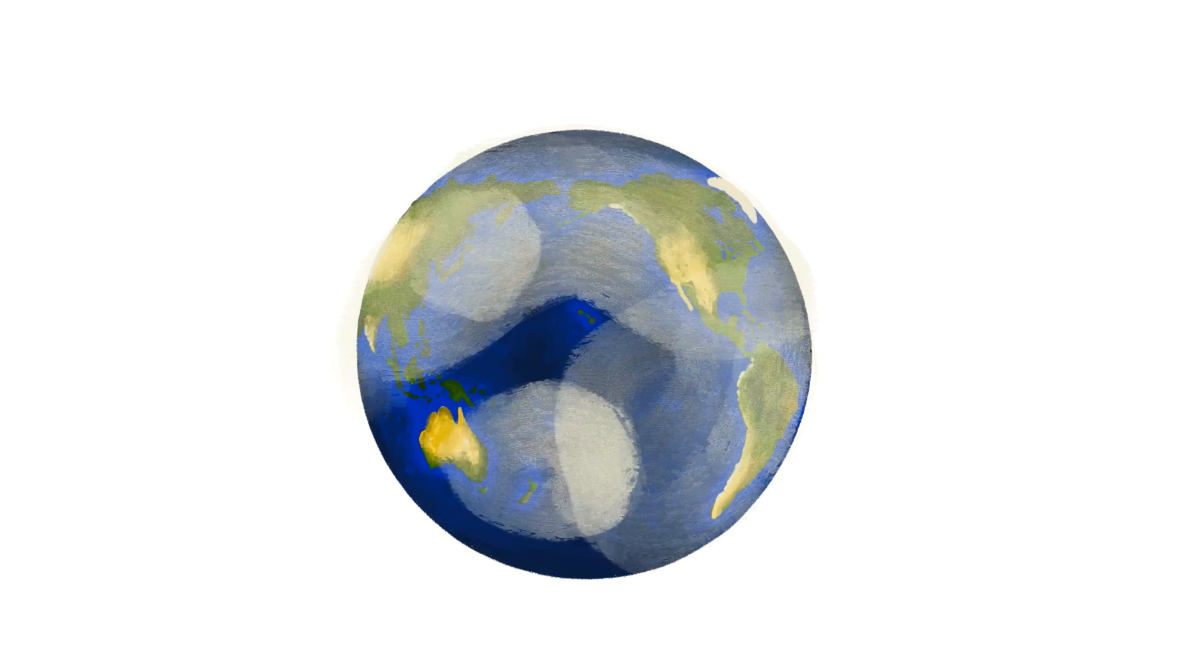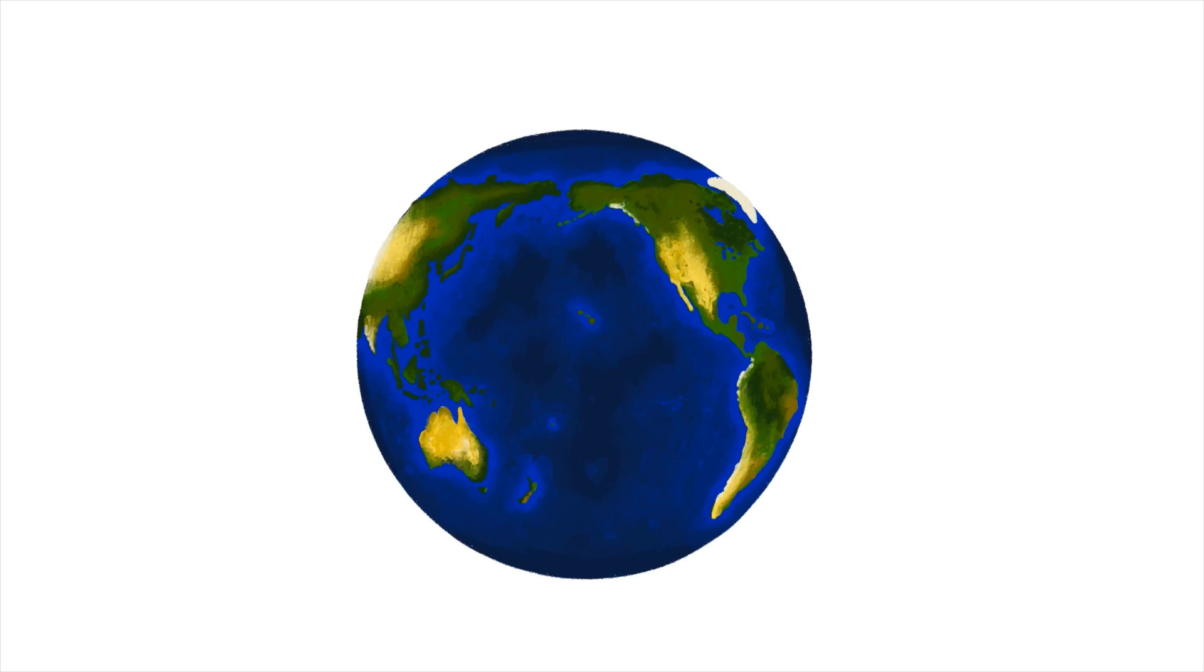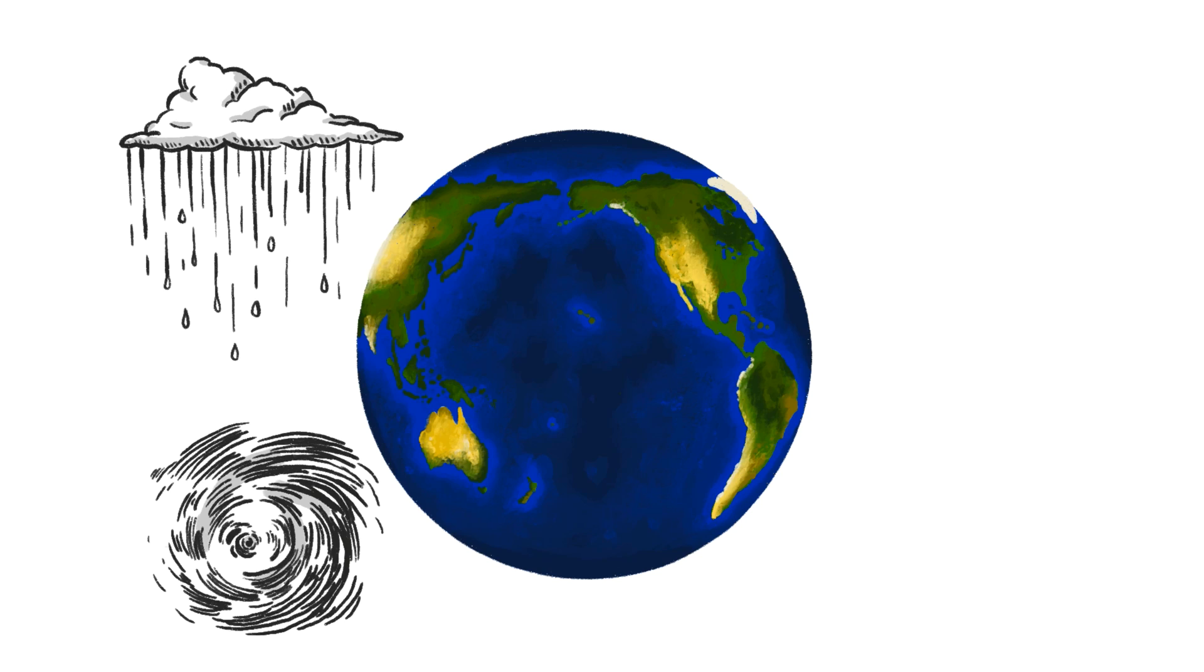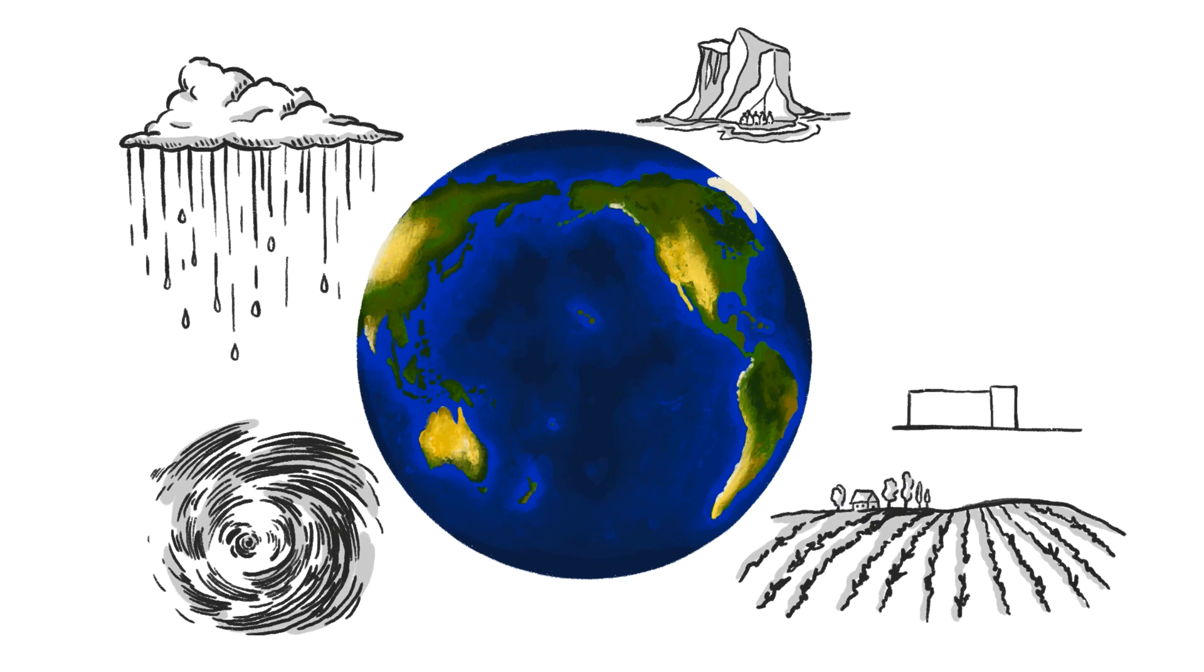Earth's climate is chaotic and noisy. Finding usable signals amidst all the noise can be challenging, be it predicting if it will rain, knowing which direction a hurricane will go, understanding the implications of melting Arctic ice, or identifying the impacts of human-induced climate warming.